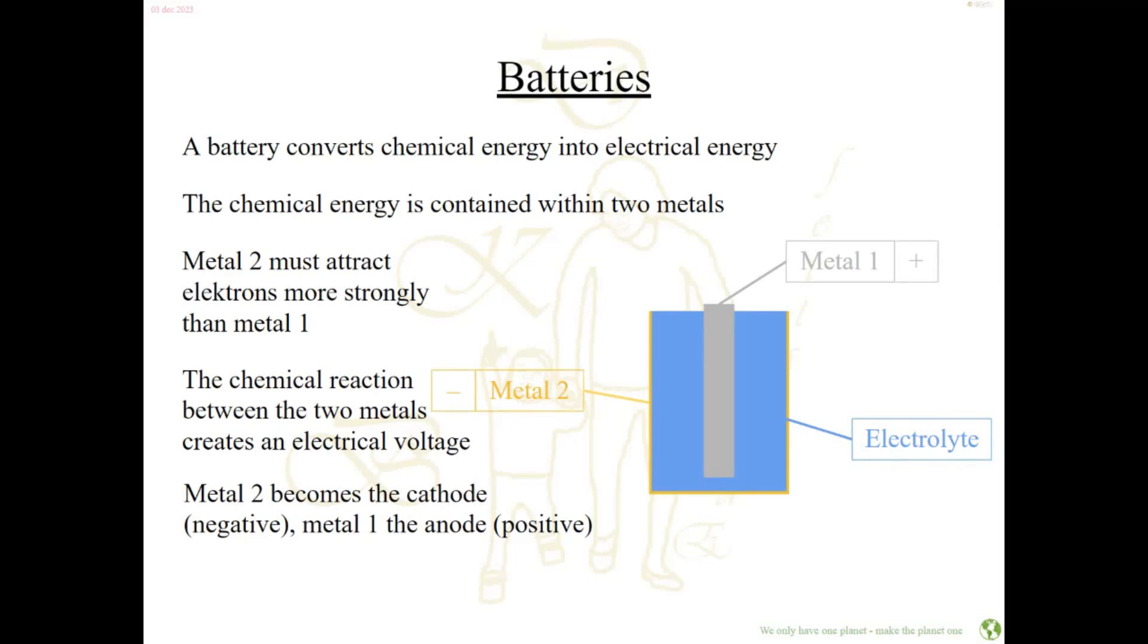Metal number two, the outside, becomes the cathode and is the negative side of the battery. Metal one is the anode and becomes the positive side. The electrolyte is there to keep the chemical reaction under control and stabilize it. If you just clamp these two kinds of metals together, the reaction will be uncontrolled and very fast, and you want to use your battery longer than a few seconds.